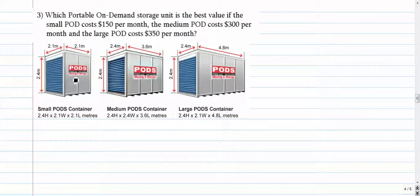We have this problem where we're trying to compare which of these three storage units is the best value for our money. The small pod here is $150 a month, the medium one is $300 a month, and the large one is $350 a month. And right here you can see the dimensions of each storage unit. So we're trying to figure out what's the best bang for our buck here. So what I want to do is just simply first find the volume of each one.